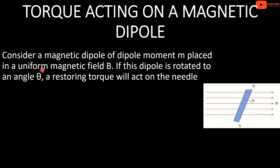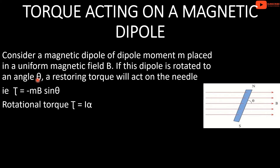In this magnetic field, the magnetic dipole has a rotating effect, and a torque acts on it. This dipole will rotate by theta degrees, and a restoring torque will also act. The torque equation is: torque equals M cross B, that is MB sinθ. The restoring torque is equal to minus MB sinθ.